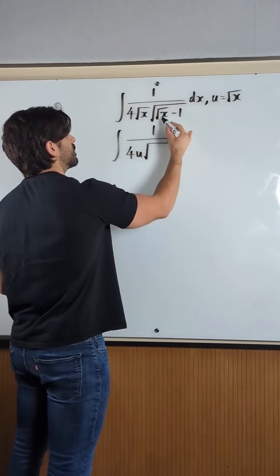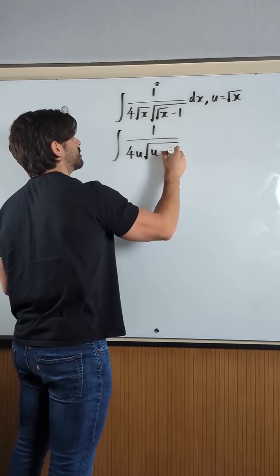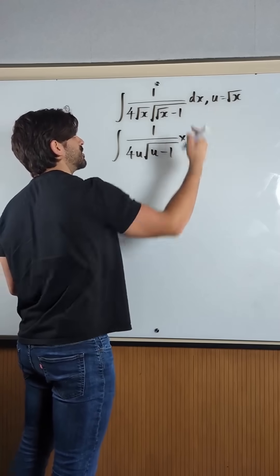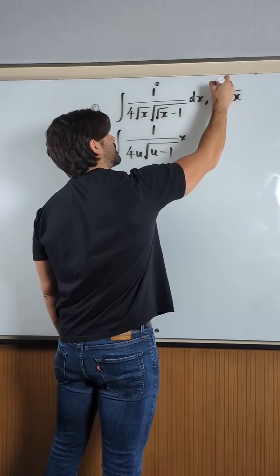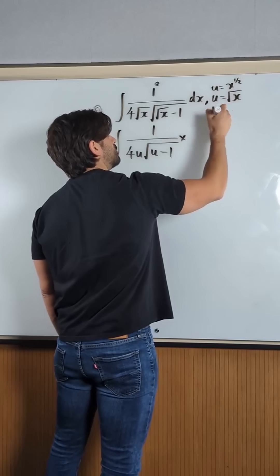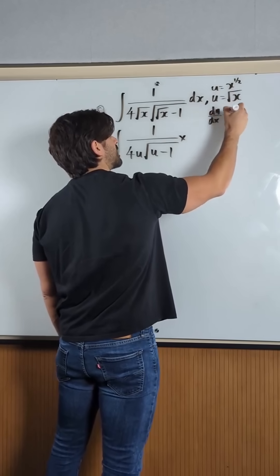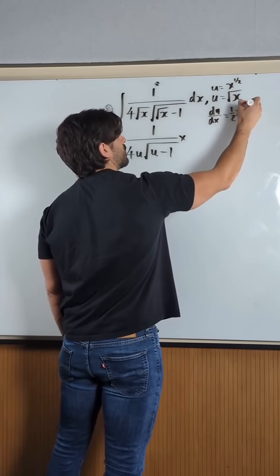We have the root of root x is u, so we have u minus 1. We have to change dx into du. We're going to do that by differentiating. Remember this is x to the power of a half. du by dx, we bring down the power and knock one off the power.